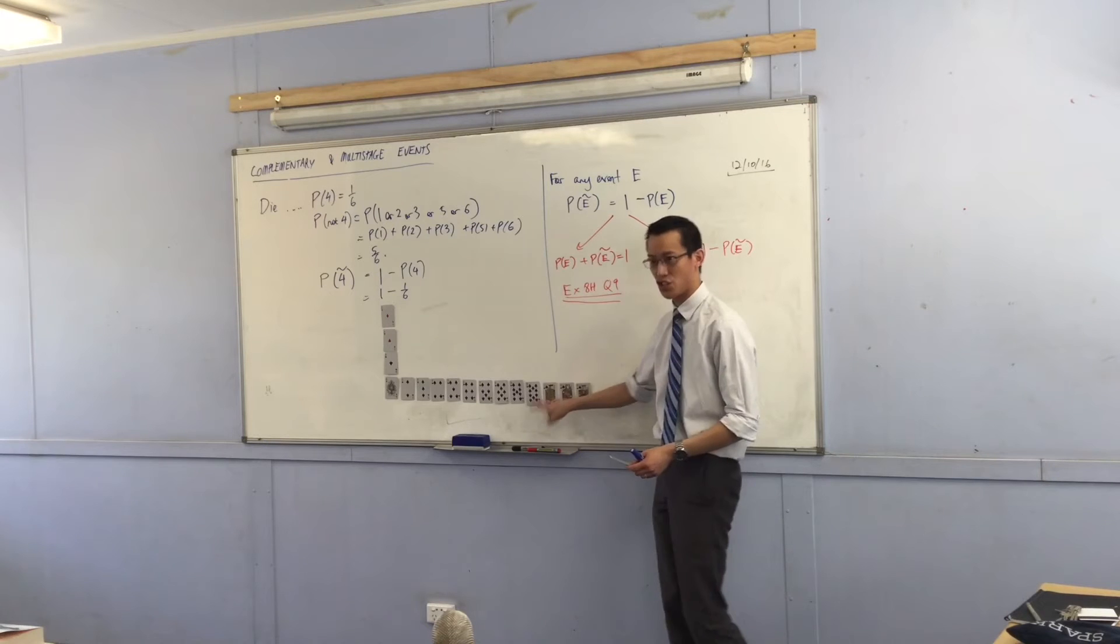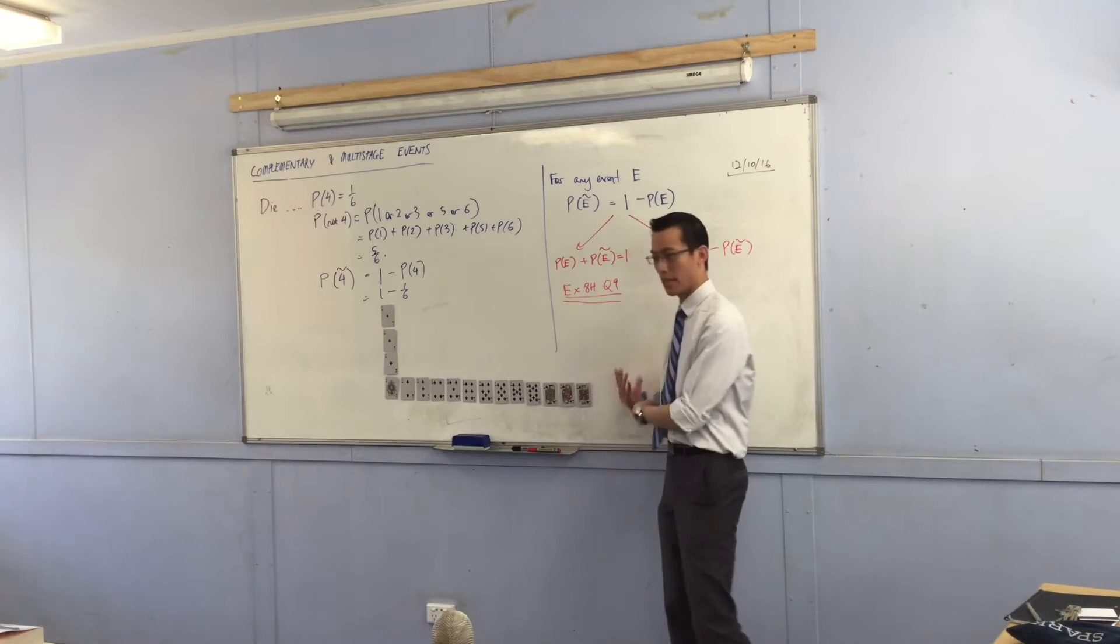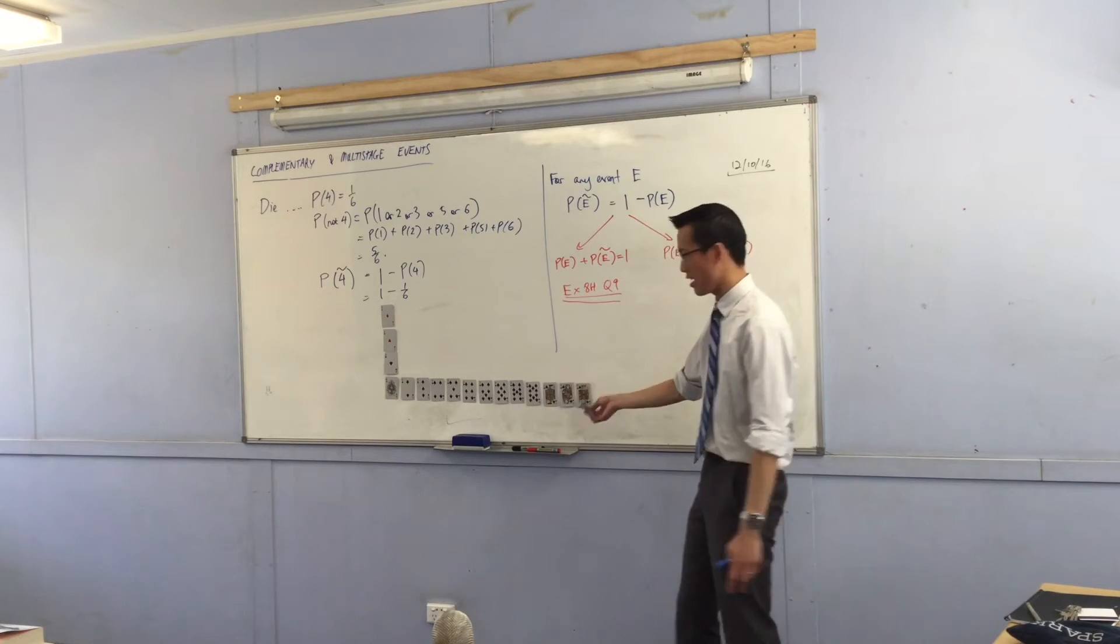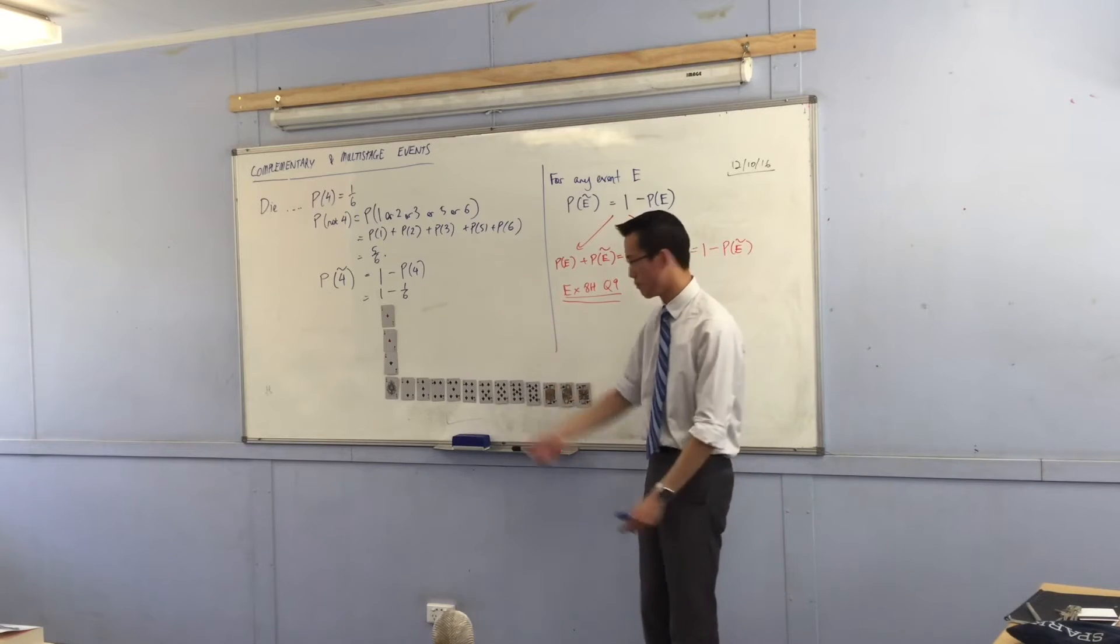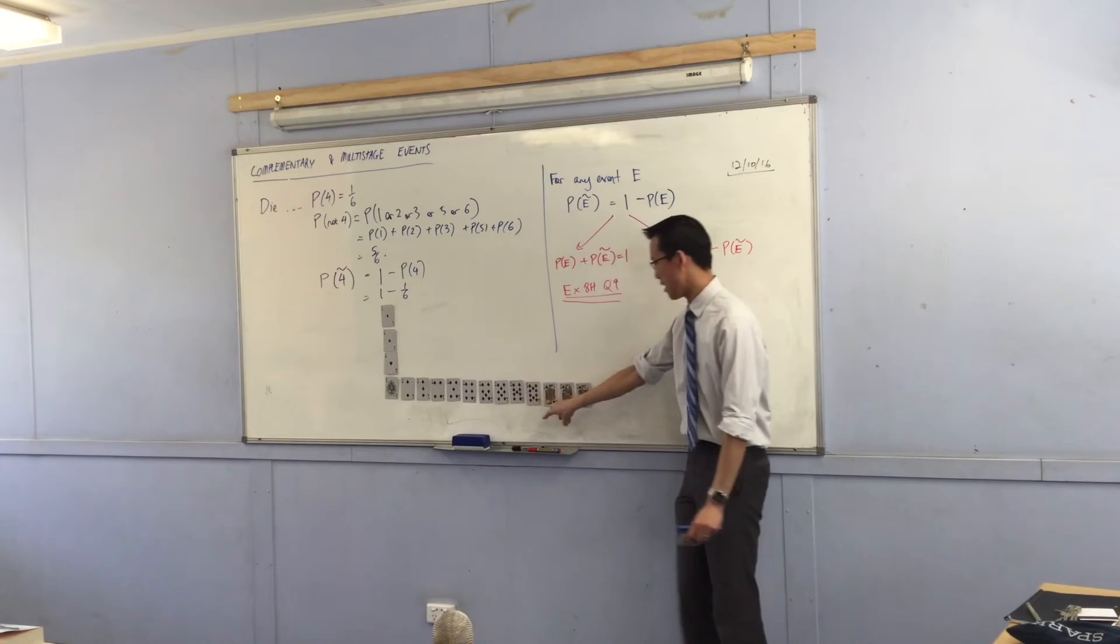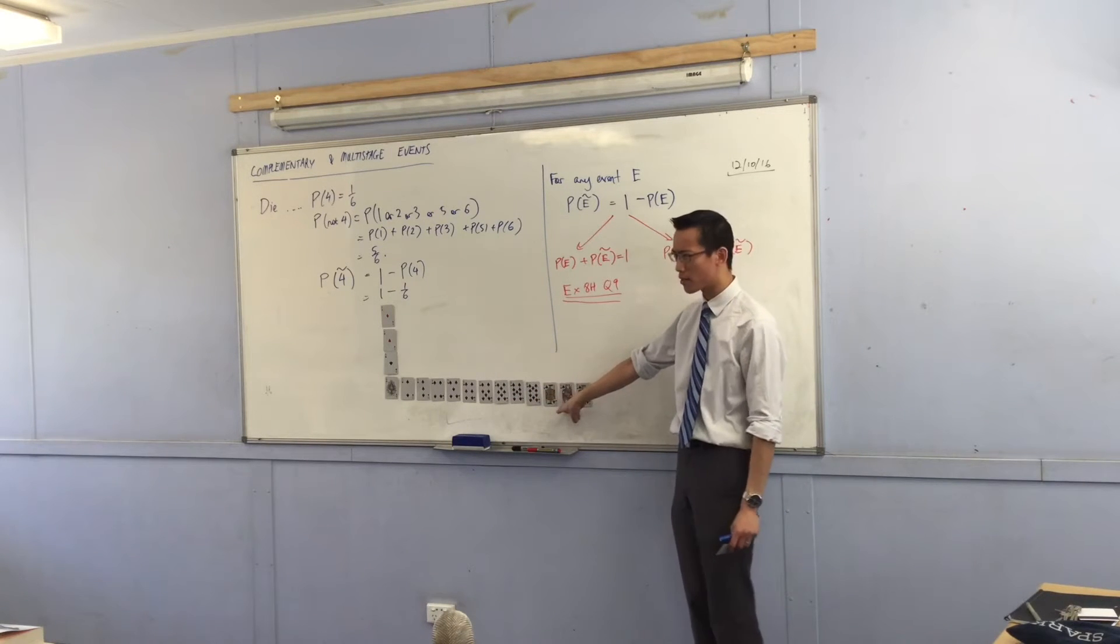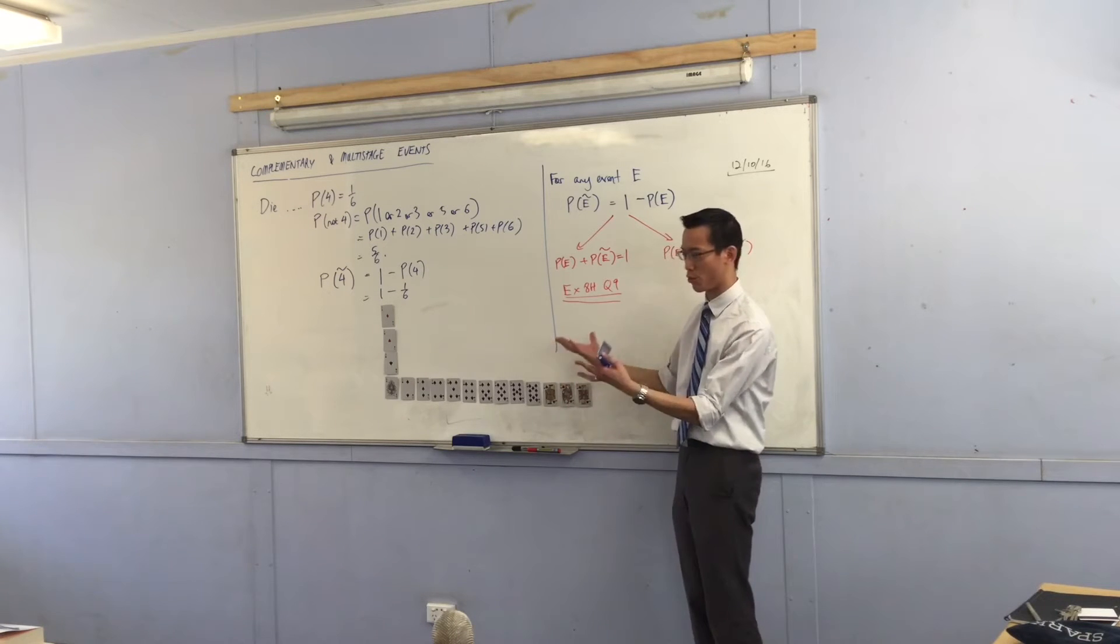And then you get these picture cards. Jack, Queen, King, in that order. If you replace the ace with a 1, you've got 10 numbers and then 3. I think they're also called court cards sometimes because Jack, Queen, King, Royal Court, that kind of thing.